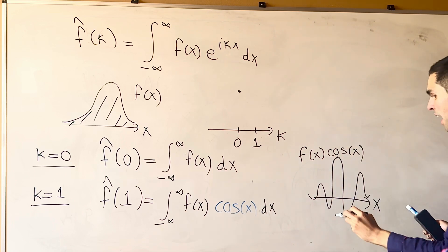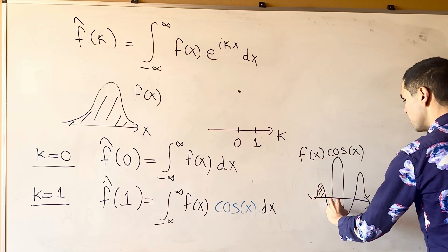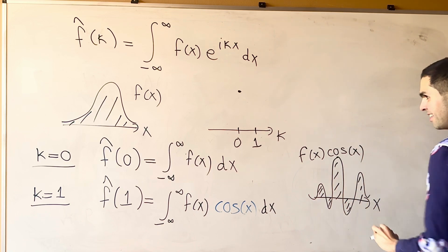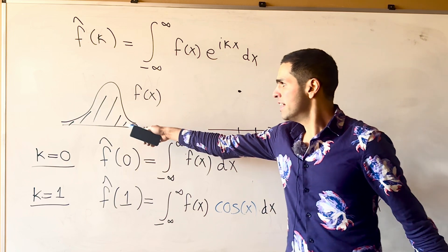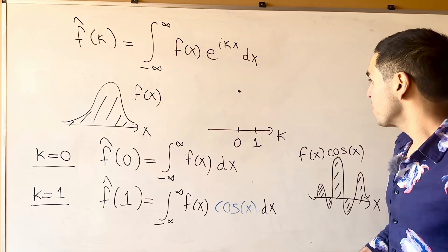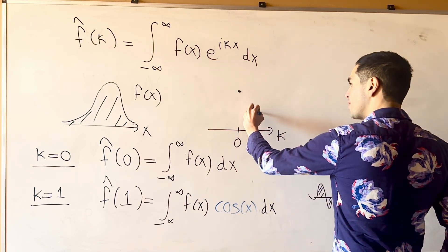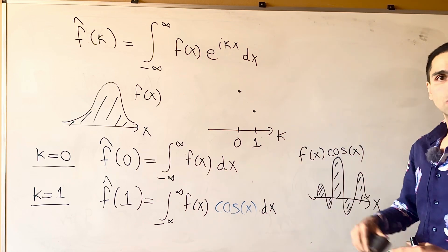And you see now, well, the areas, they kind of cancel out. So, what you get, then, is that the total area is smaller than this area. So, we expect f hat of 1 to be much smaller.